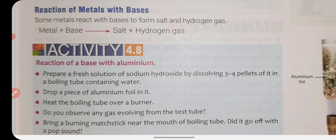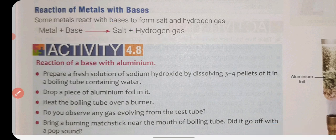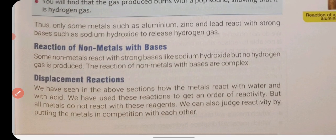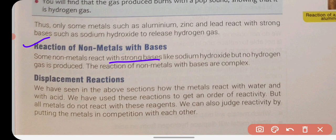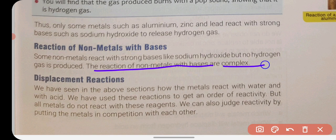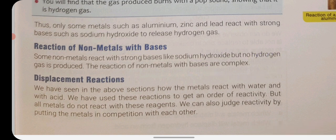Reaction of metals with bases: some metals react with strong bases to form salt and hydrogen gas. Only some metals such as aluminium, zinc, and lead react with strong bases like sodium hydroxide to release hydrogen gas. Reaction of non-metals with bases: non-metals can react with sodium hydroxide, but no hydrogen gas is produced. The reactions of non-metals with bases are complex.